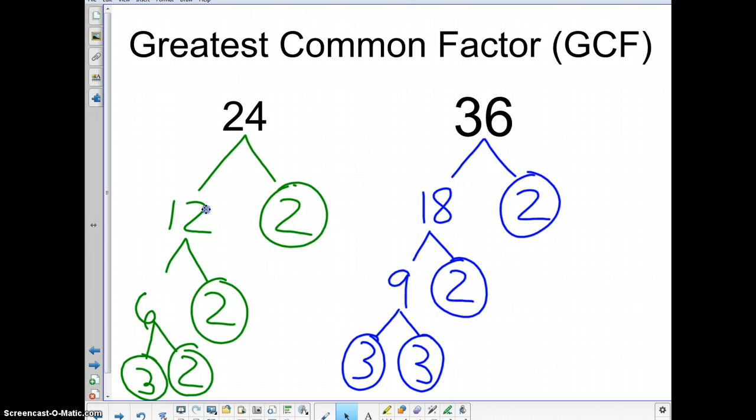Alright. So those are the prime factorizations of 24 and 36. Now to find the greatest common factor, we have to match up which factors they have in common. Which prime factors they have in common.